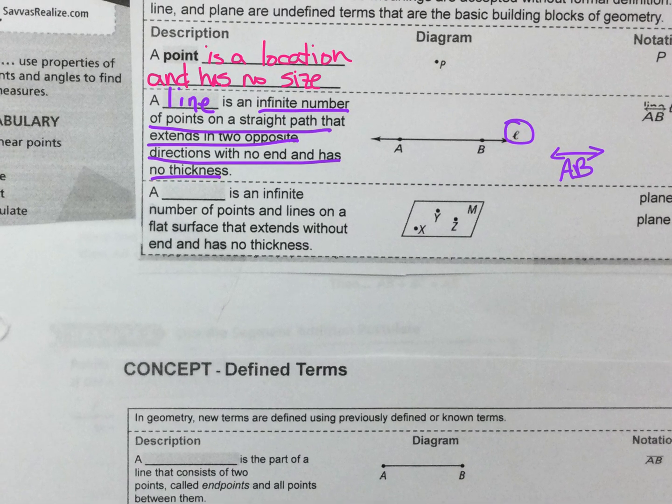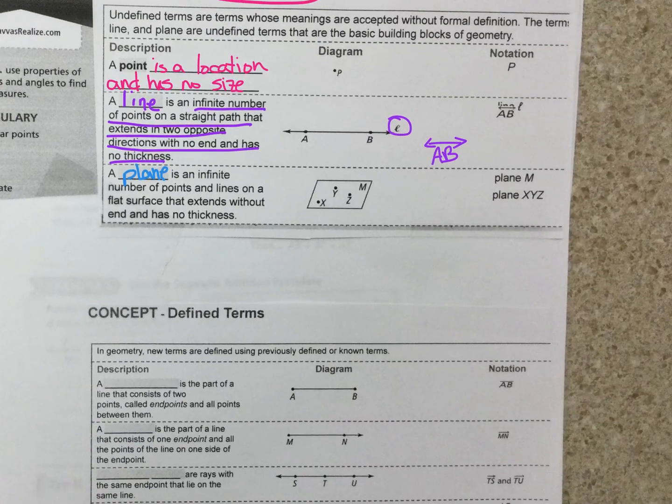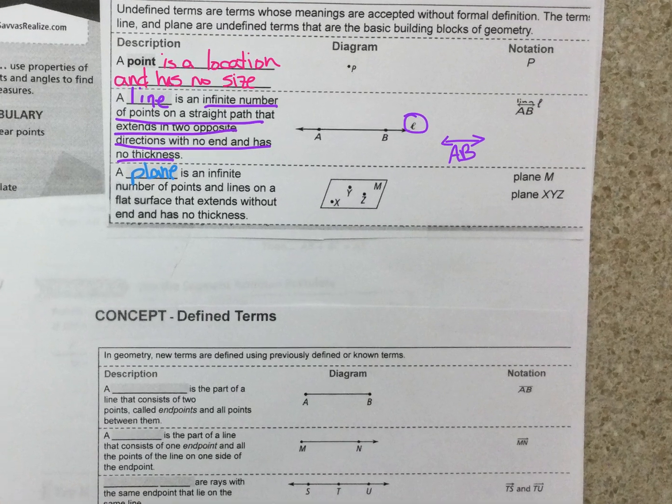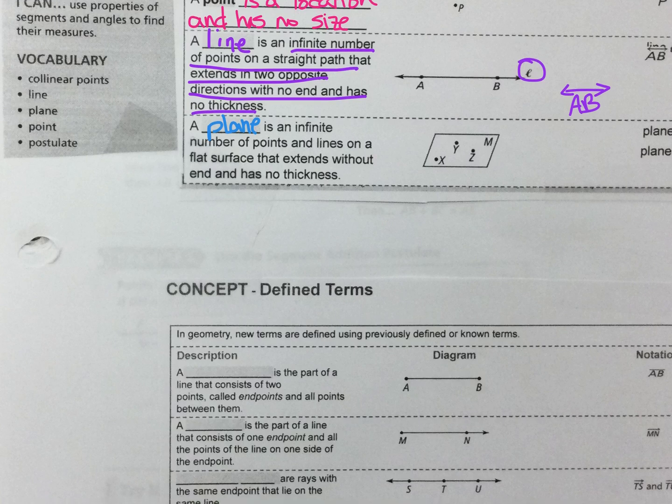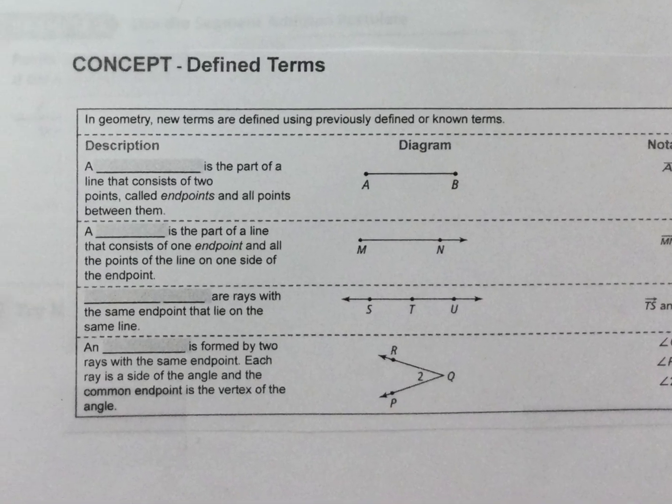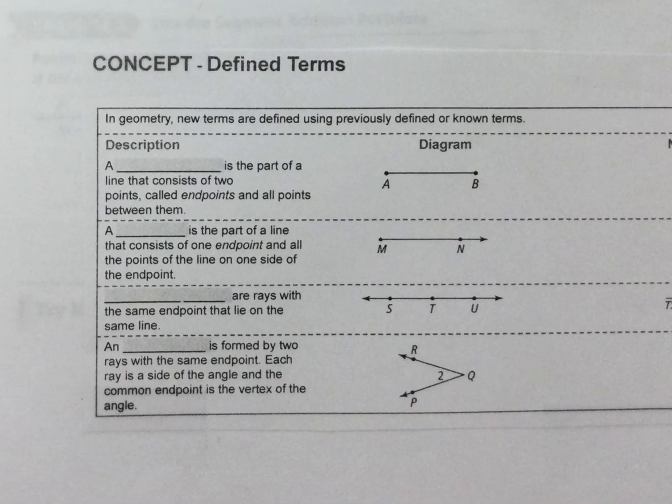A plane is an infinite number of points and lines that extends without end and has no thickness. And you can see right there how we name them, so it would be like the wall of the classroom going forever and ever in all directions.